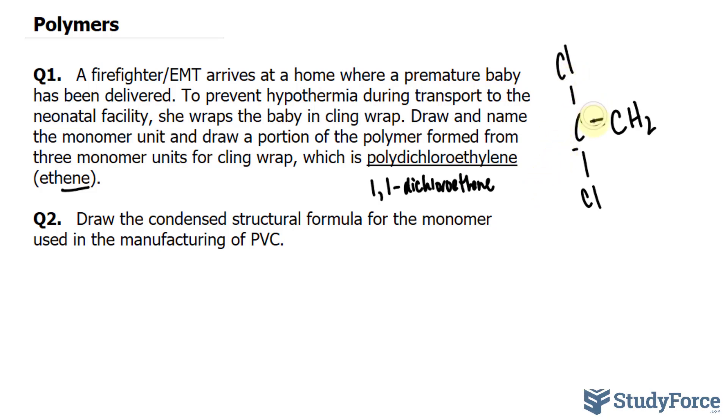So we have one, two, three, four maximum bonds around this carbon. But this is a polymer, and they want three monomers, so we need three of these. Let's go ahead and do that.